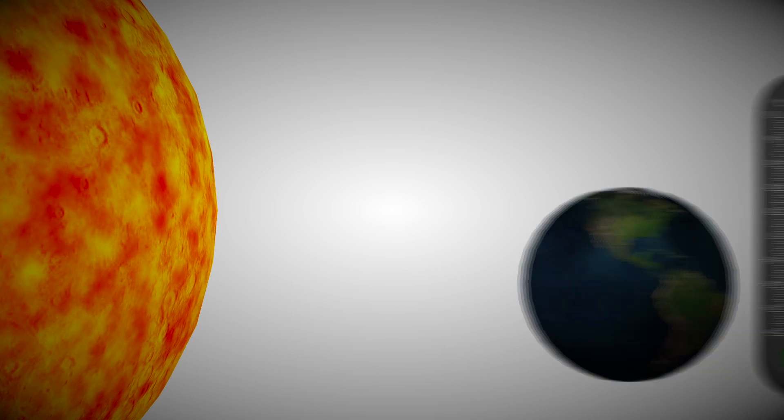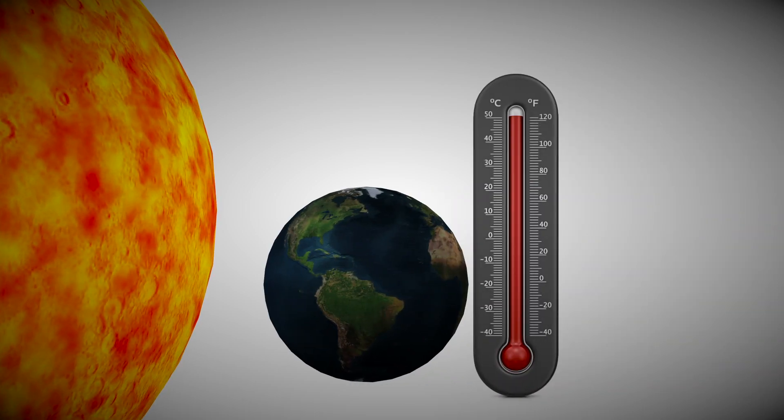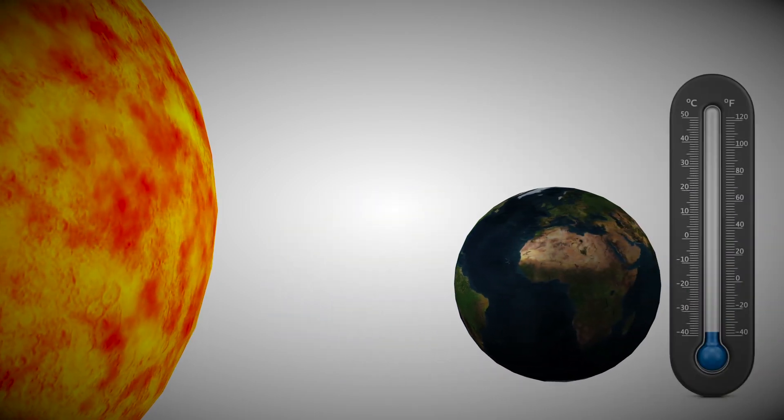Earth is just the right distance from the Sun. If we were any closer, it'd be too hot. And if we were any further, we'd be freezing.